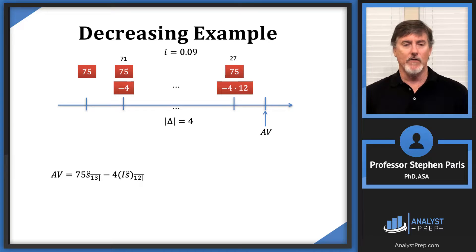Be careful—be a little bit careful there with the way I did this one. If you did it this way, you have 13 payments of 75, but on the increasing annuity that you're subtracting off, there are actually only 12 payments.